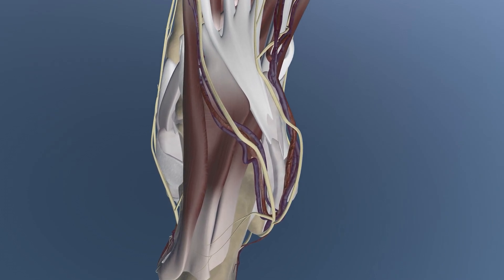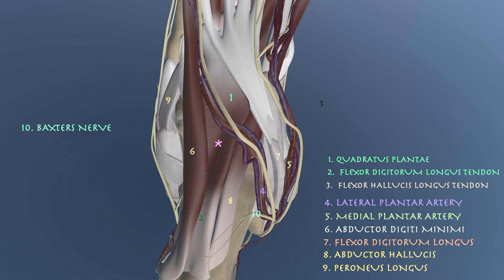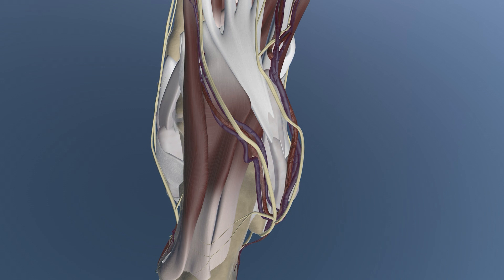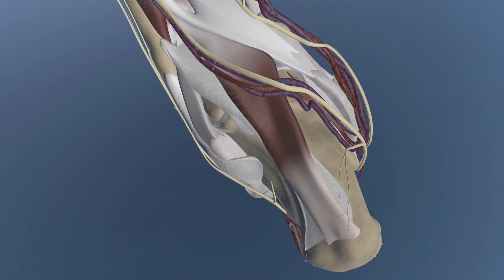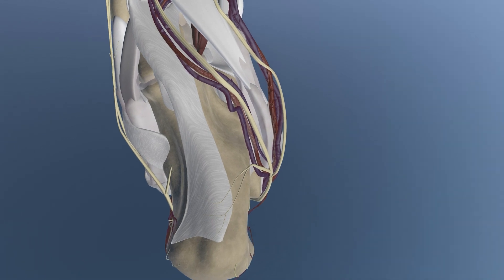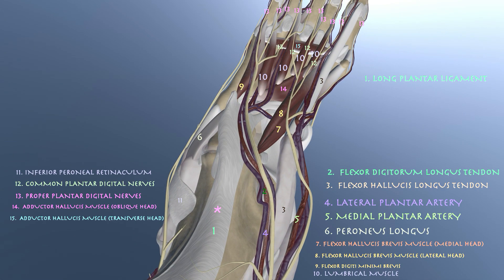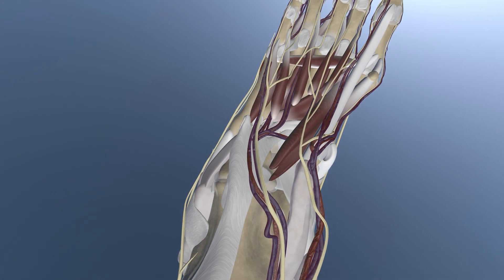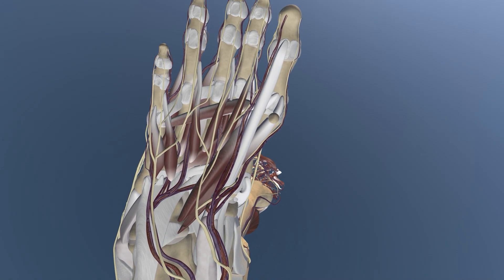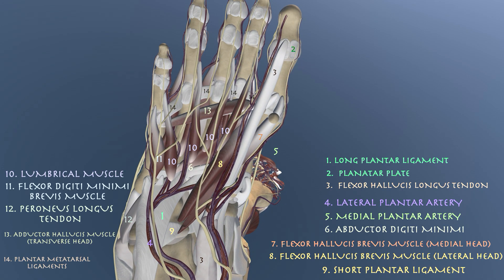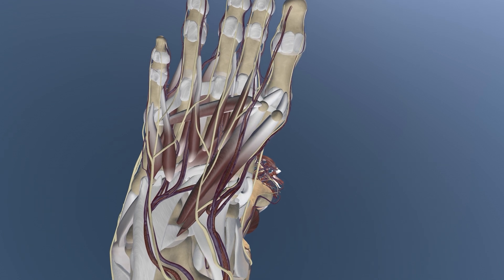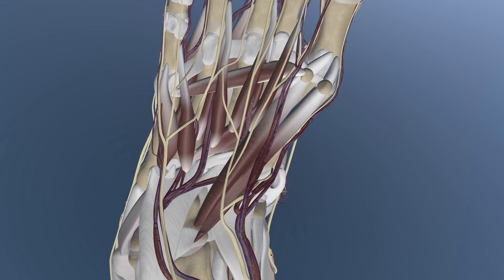With that muscle removed, you can see the quadratus plantae muscle as well as the abductor digitorum minimi muscle, which is essentially at the same level as the flexor digitorum brevis. Now removing the quadratus plantae muscle, you can see the long plantar ligament underneath. You can appreciate the complicated musculature on the plantar aspect of the midfoot going into the forefoot — all the different lumbrical muscles, essentially attached to the tendons of the flexor digitorum longus muscle.